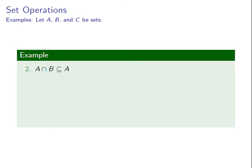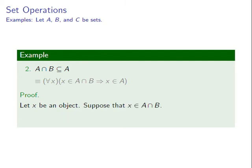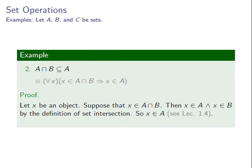Consider the claim: A intersection B is a subset of A. This is equivalent to the statement: for every object x, if x is an element of A intersection B then x is an element of A. To prove this, let x be an arbitrary object. Suppose that x is an element of A intersection B. Then x is an element of A and x is an element of B, by the definition of set intersection. So x is an element of A by one of the inference rules discussed in Lecture 1.4. Thus A intersection B is a subset of A.